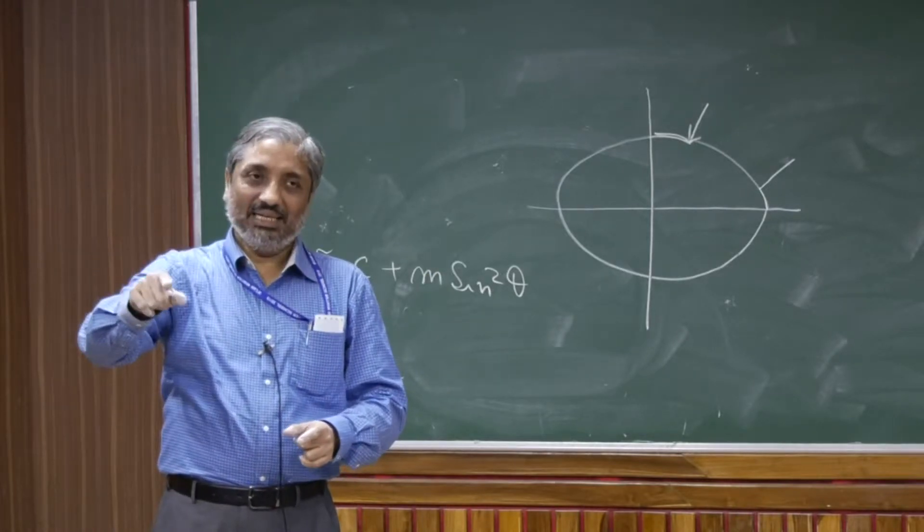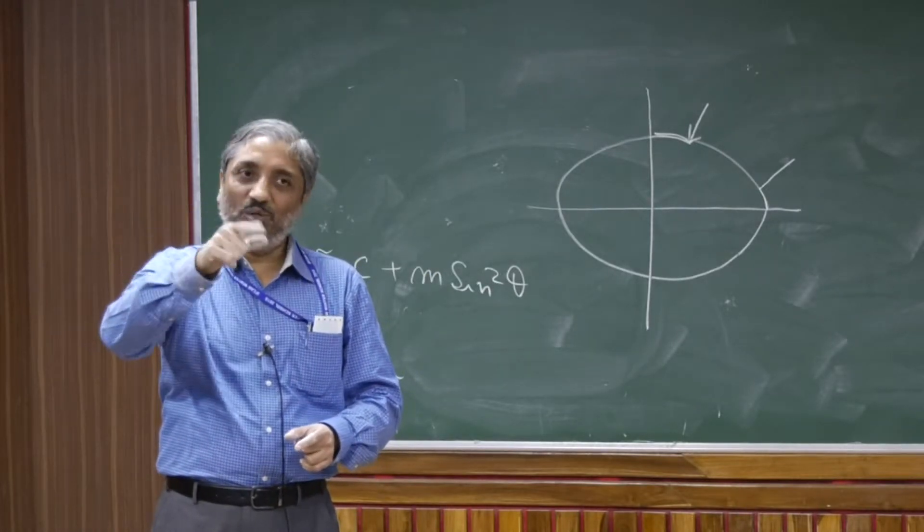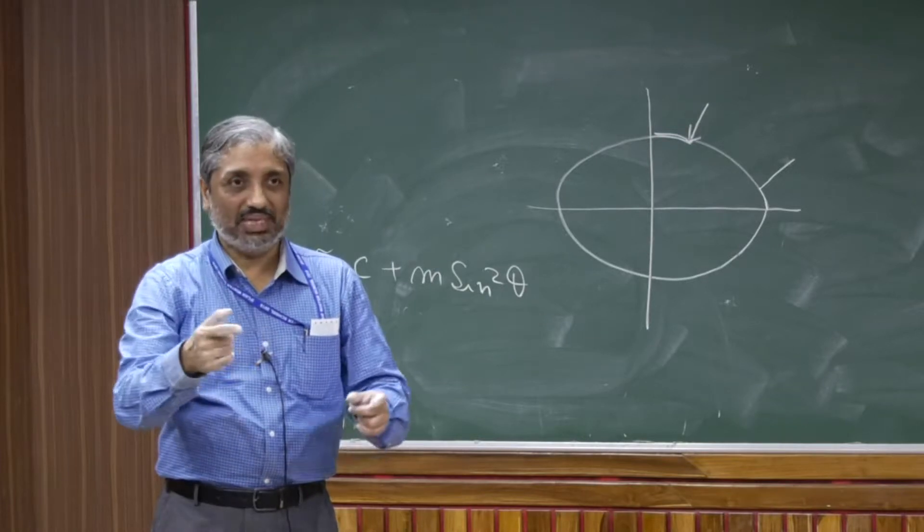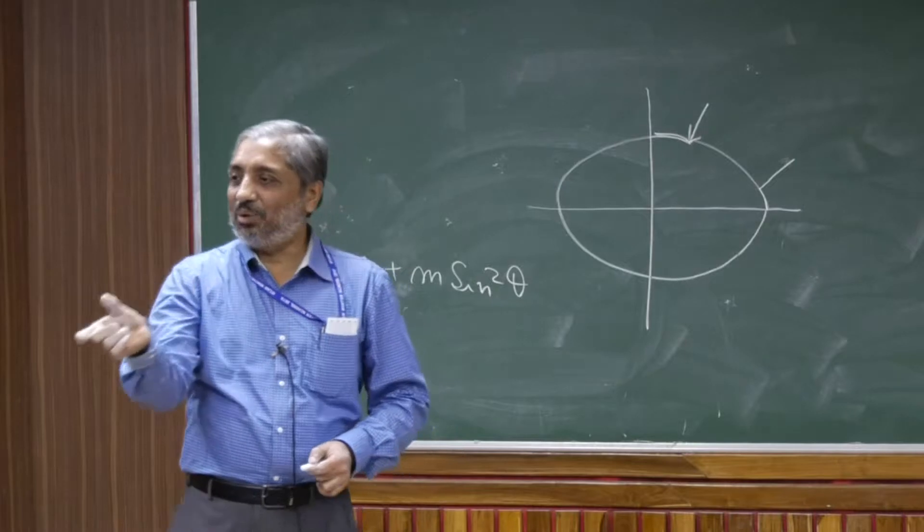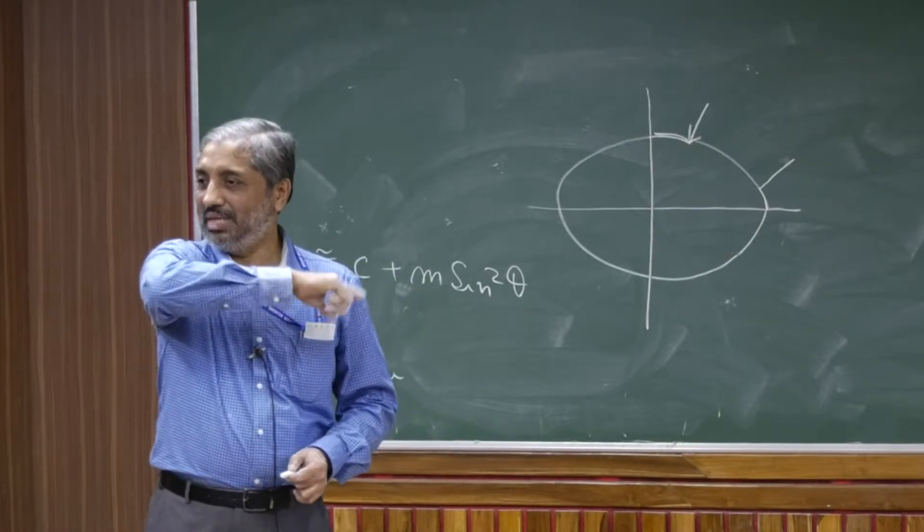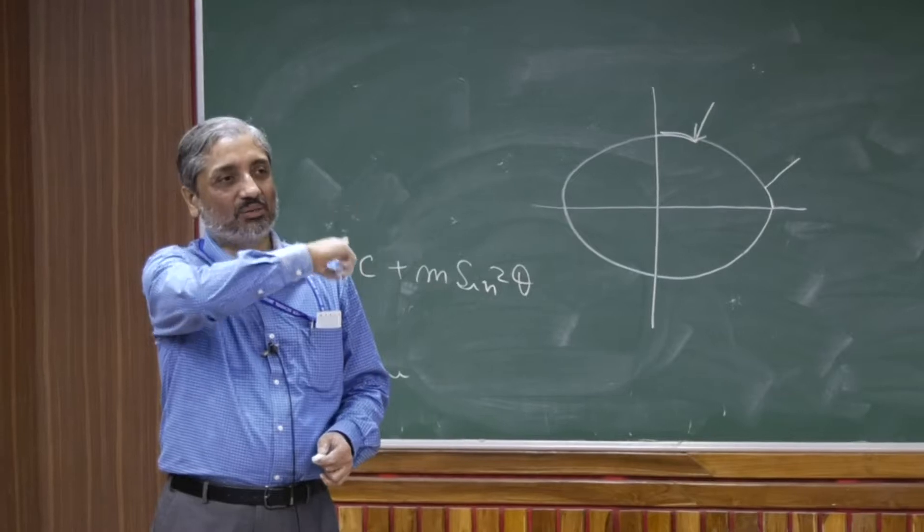So Legendre decided that he will calculate the value of m and c somehow from the data. And then he will calculate the length of 1 degree latitude for different theta and add them up. That will give him the length of the meridian quadrant.